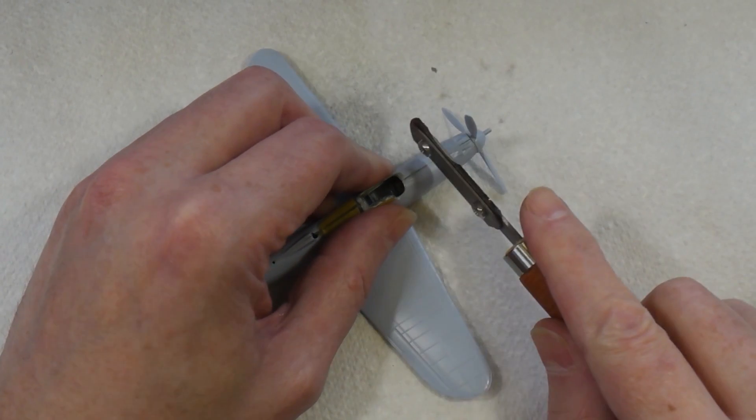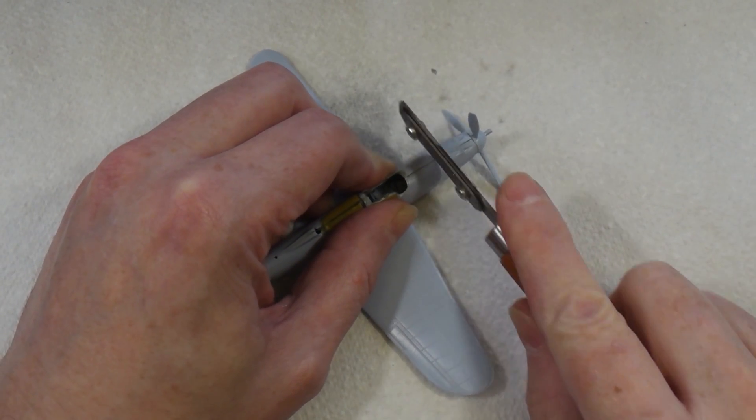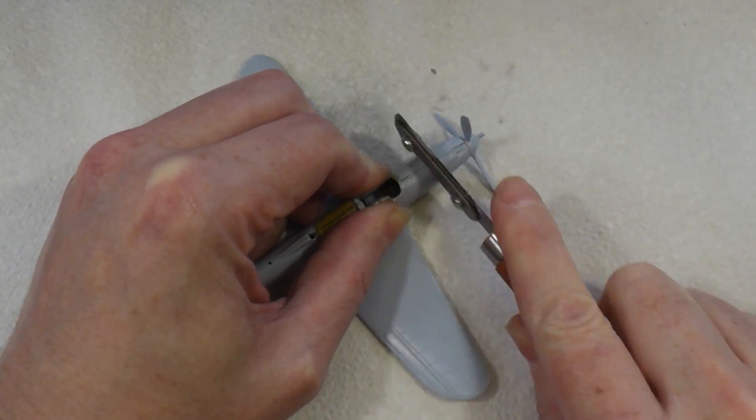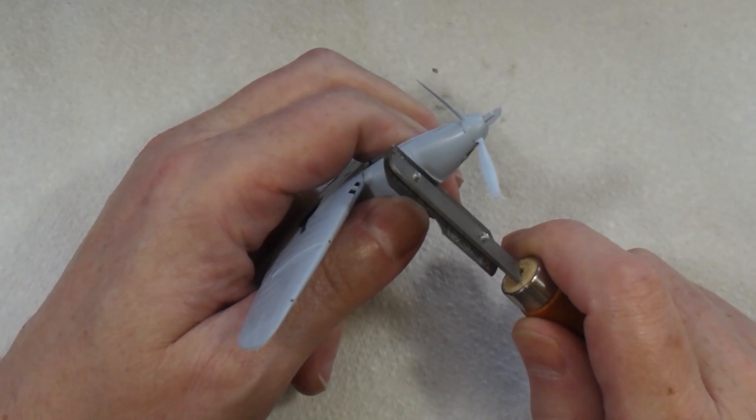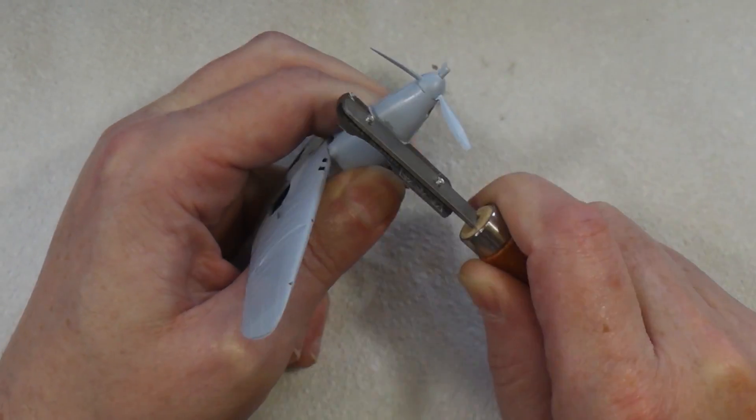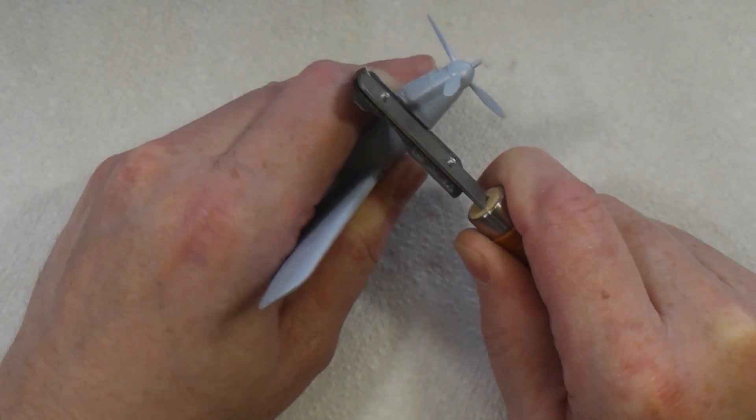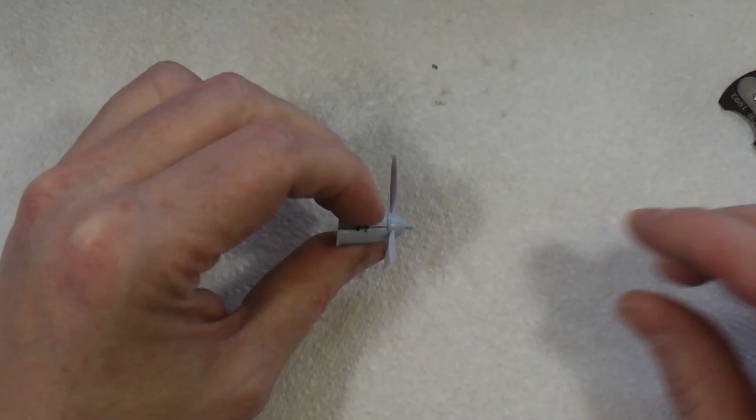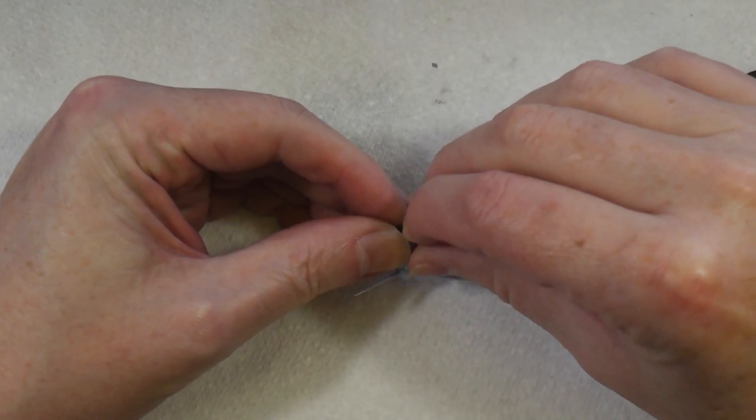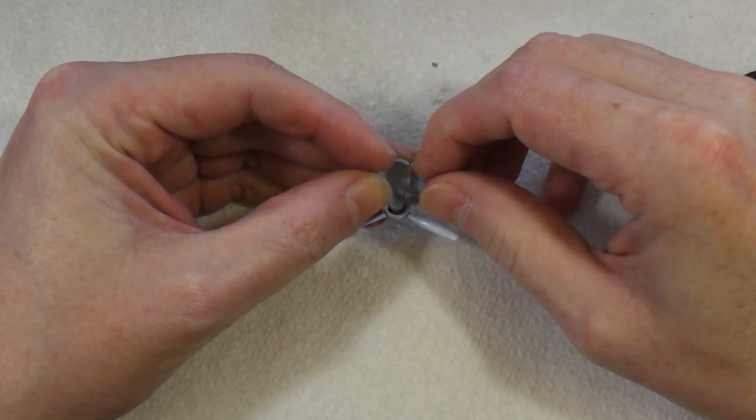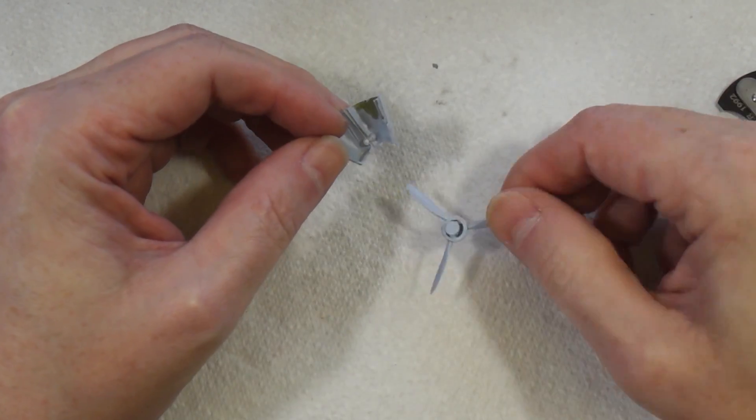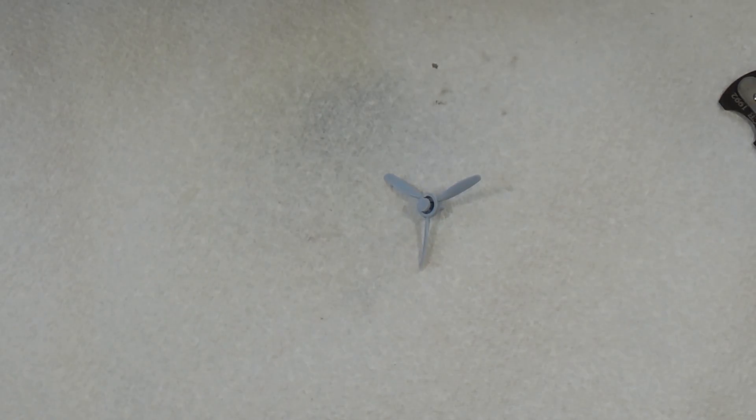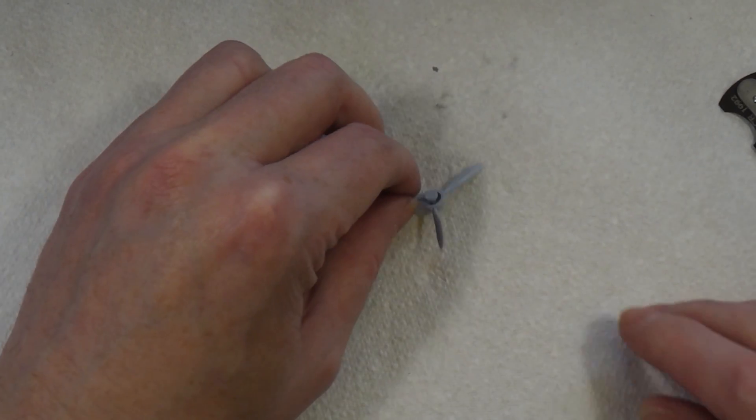I think what I might do is actually cut through the front and then see if I can peel it apart, because I don't want to break the blades. There we go, okay, so there's the prop.